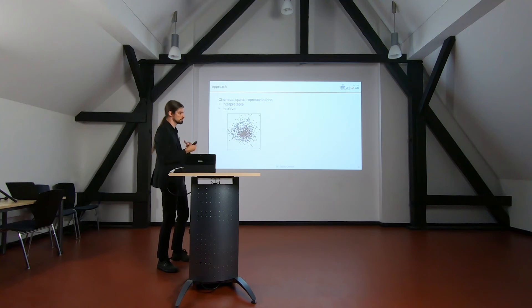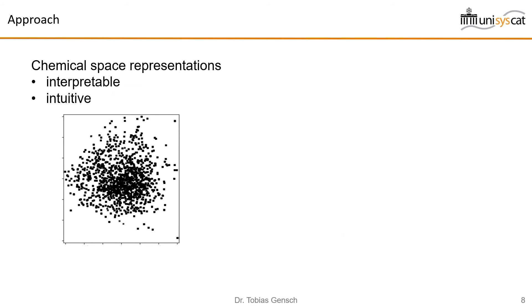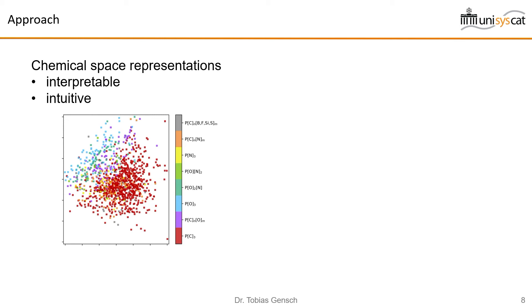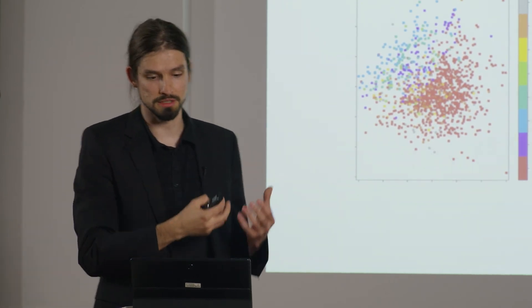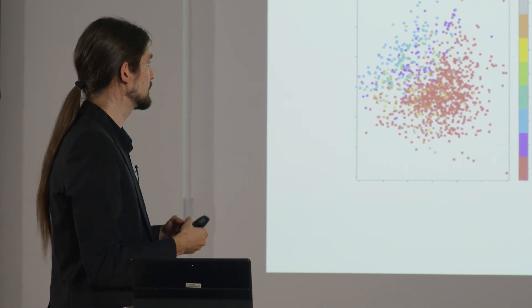I've mentioned that this chemical space representation is supposed to be intuitive. We can take each of these points and color code it with properties that we know as chemists that are independent of the descriptors that we have used to construct this map. If we have chosen the representation in a meaningful way that it actually captures chemical reactivity, you will see what actually happens here is that groups that we know to be chemically similar will appear in similar regions. Generally similar molecules come up in similar areas and this is crucial for guiding experiments.